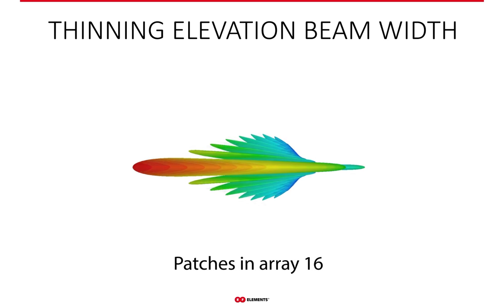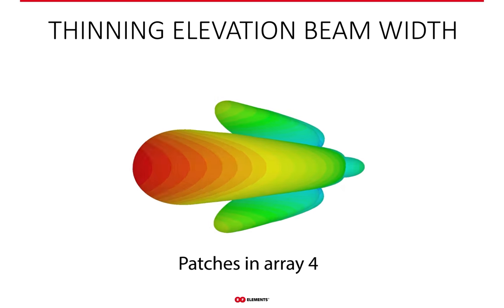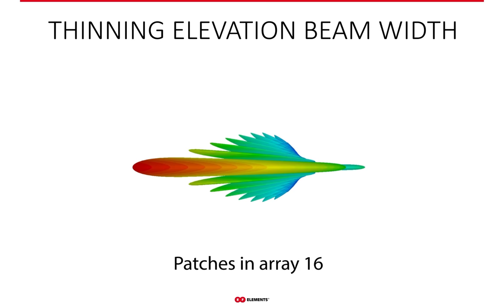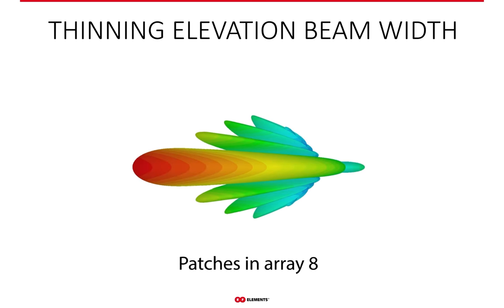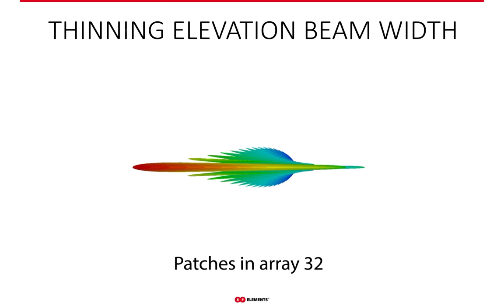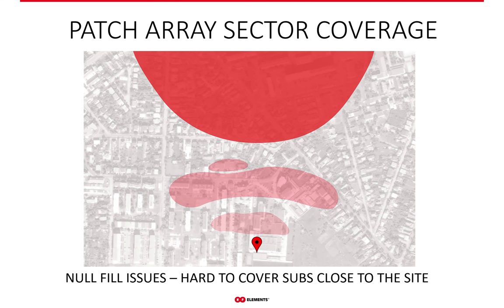As the number of patches increases, gain grows — which is desirable — but elevation beam width decreases. The narrow beam width in elevation causes the null zone to increase, which becomes covered by side lobes visible in the animation. As illustrated, in the case of a high-gain patch array antenna, the area near the tower is covered by side lobes if at all, and these side lobes change with frequency, meaning you can't provide stable coverage to customers near the tower. This zone of uncertain coverage increases with patch array gain.